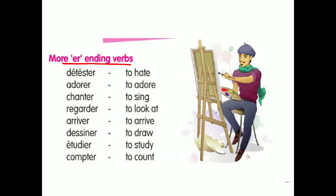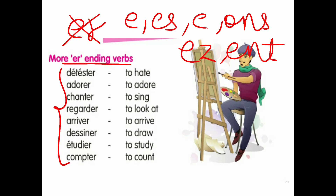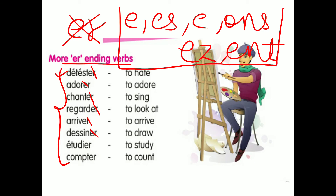Now we'll see some more ER ending verbs. If any ER verb comes to you, you just remove the ER to get the radical form, and then add E, ES, E, ONS, EZ, ENT. Just remember these seven endings and you are able to do it.